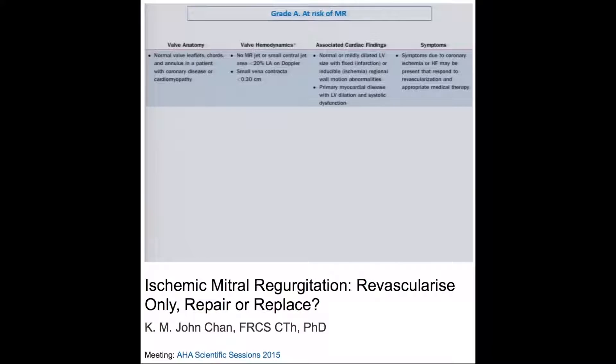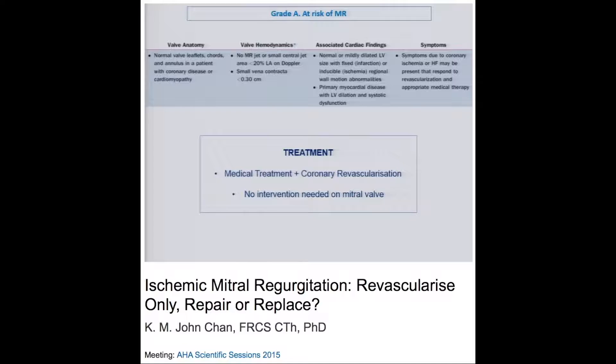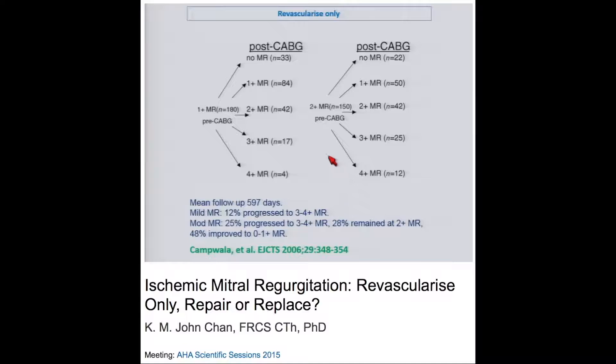Grade A patients are at risk of MR — they have no MR or very little, with vena contracta less than 0.3 cm. Leaflets are normal with no leaflet tethering, and the LV is only mildly dilated at most. These patients almost certainly do not need any intervention on the mitral valve. They need optimal medical treatment and coronary artery revascularization if appropriate.